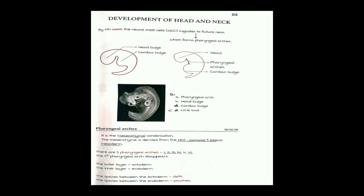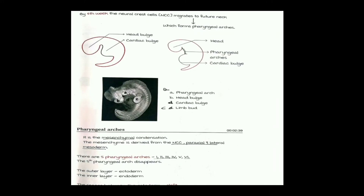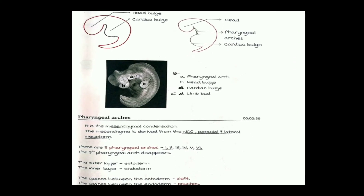In the diagram, image-based questions are common for identifying each structure. In the diagram, A corresponds to the pharyngeal arches, B to the head bulge, C to the limb bud, and D to the cardiac bulge. Now I'll talk about pharyngeal arches — pharyngeal arches are mesenchymal condensations.